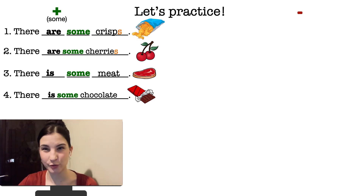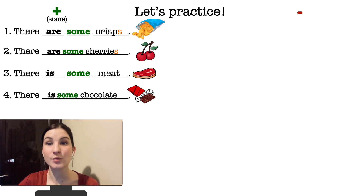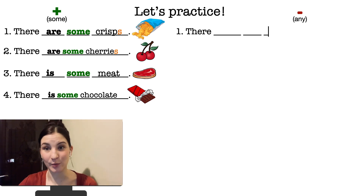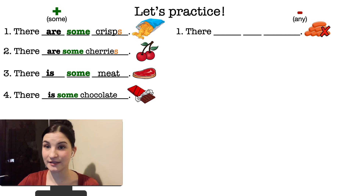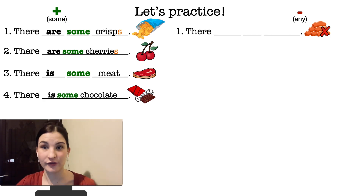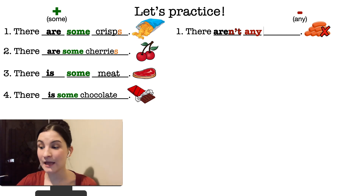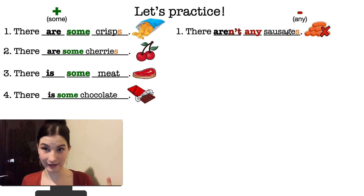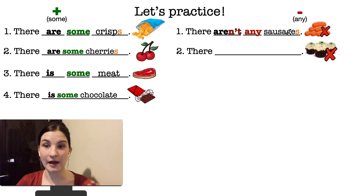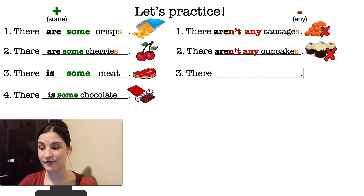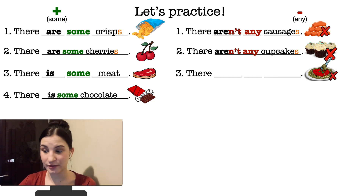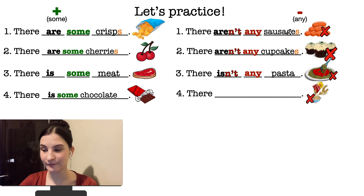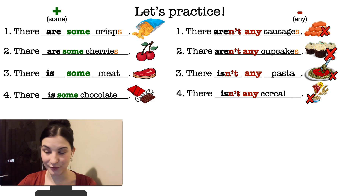Now let's practice with negative sentences — we use 'any'. You can see sausages and the red cross, meaning we don't have sausages. Sausages are countable, so we can use 'aren't': 'there aren't any sausages'. There aren't any cupcakes. Pasta is uncountable: 'there isn't any pasta'. And cereal is uncountable: 'there isn't any cereal'.